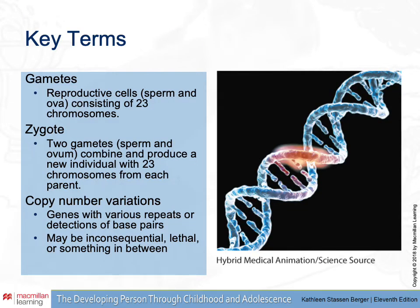A few key terms to know about the reproductive process: a gamete, which is a sperm or an ovum, has 23 chromosomes on it. When two gametes come together, they create a zygote. So sperm and ovum each bring 23 chromosomes to make a new offspring. When the pairing happens, through the natural course of things, you will have variations.